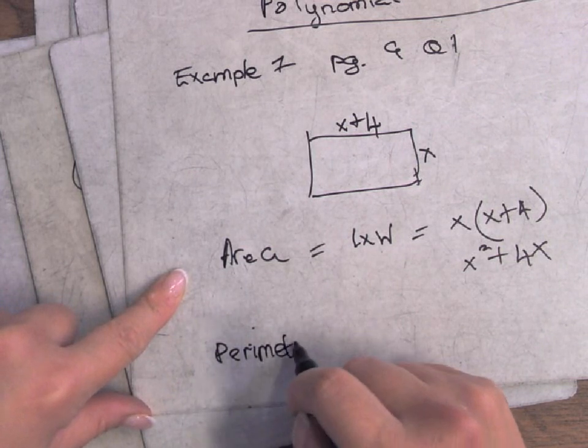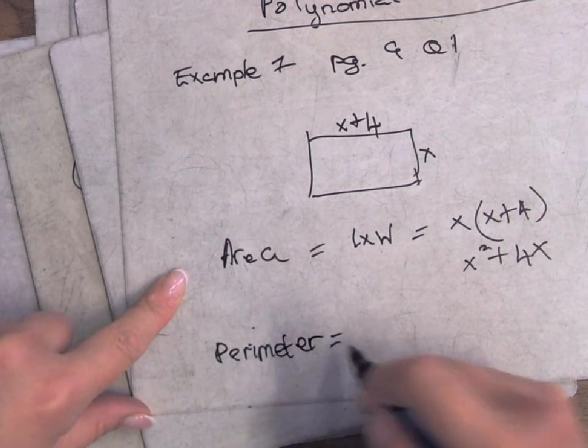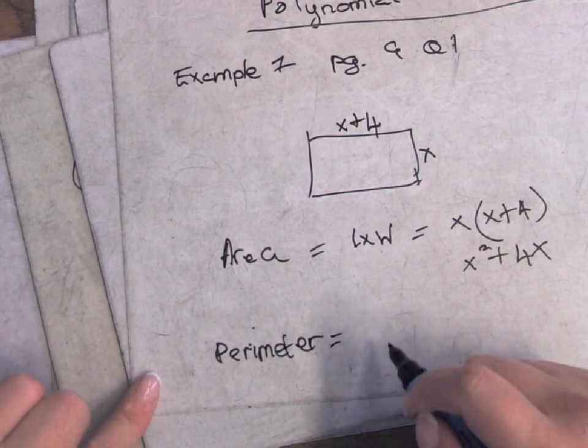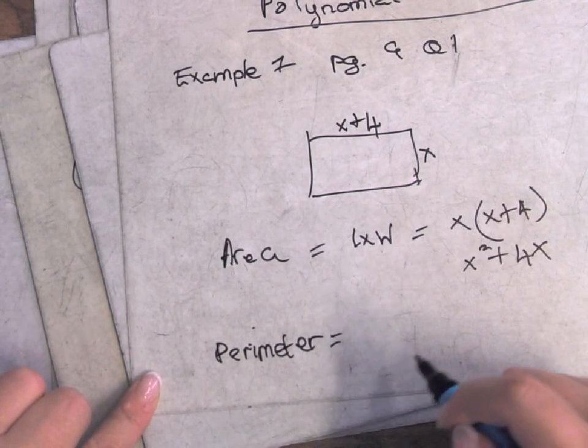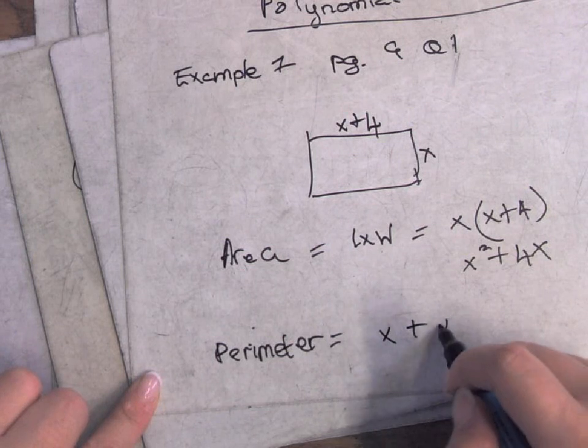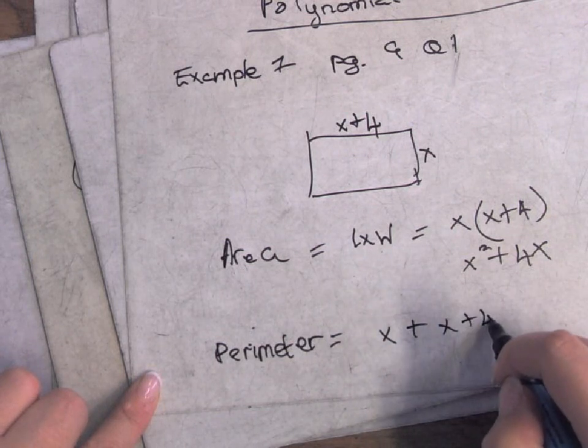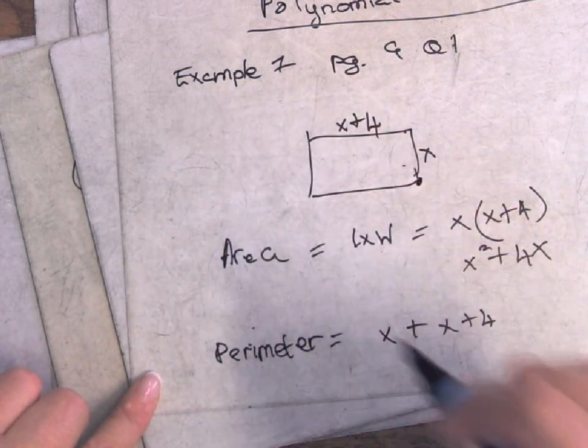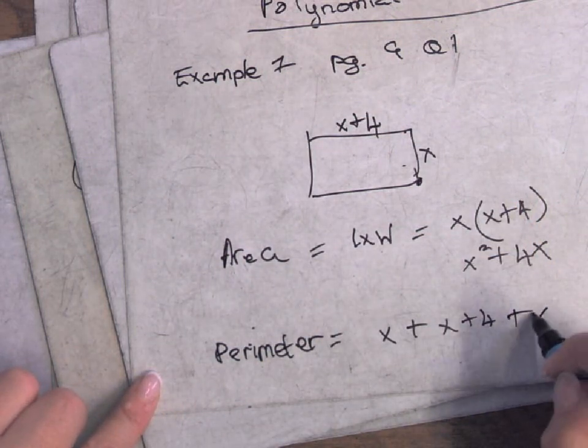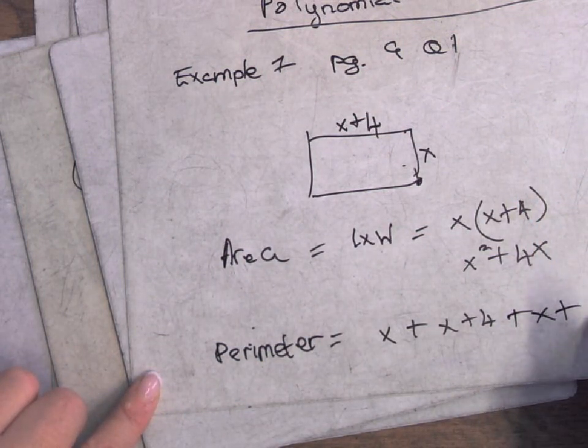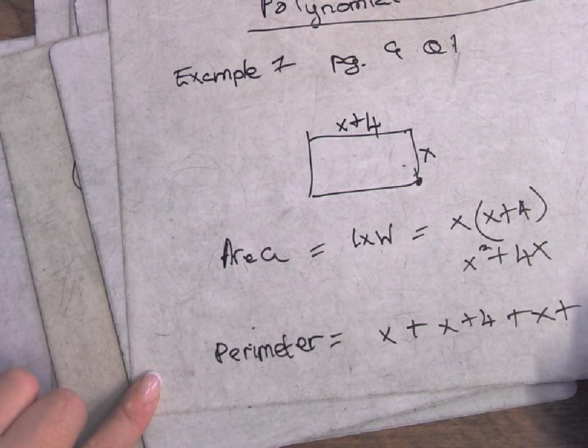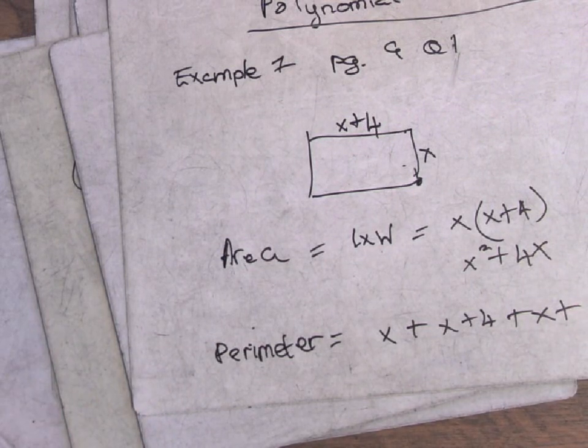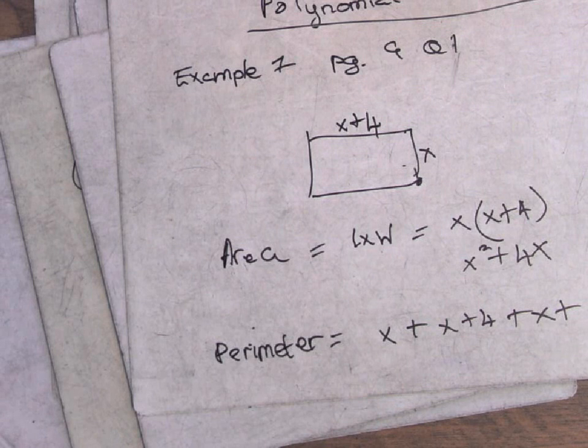Part two of that question is give an expression for the perimeter. So the perimeter is just add, go all the way around. So it's x plus x plus four, so I'm starting here, up here, over here, down will give me another x, and back to the start will give me another x plus four. You could do twice the length plus twice the width if you want to get the exact same answer.